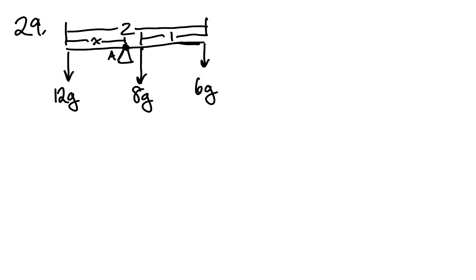So we have this free body diagram where we have the load of the beam acting through its center of mass, so that would be at one meter from this end. And then we have a 6g load acting at one end and 12g acting at the other end and we need to figure out this x.